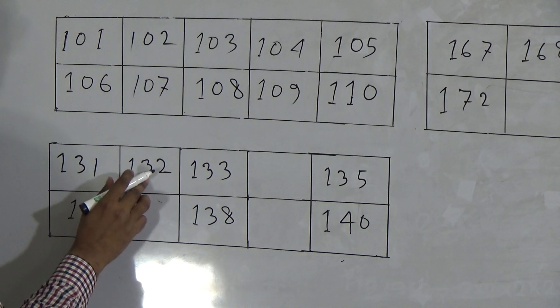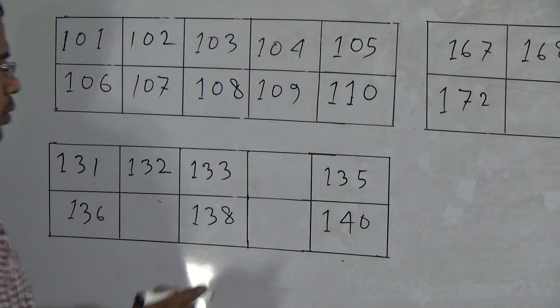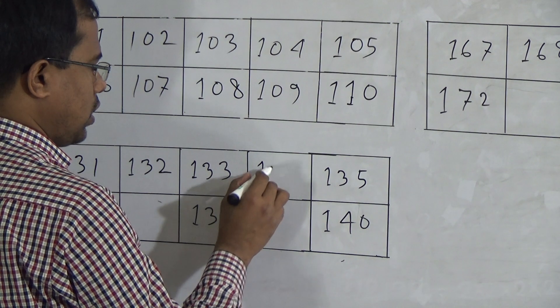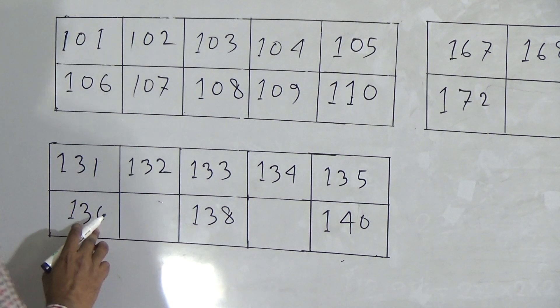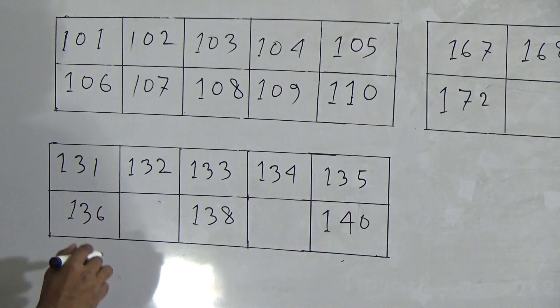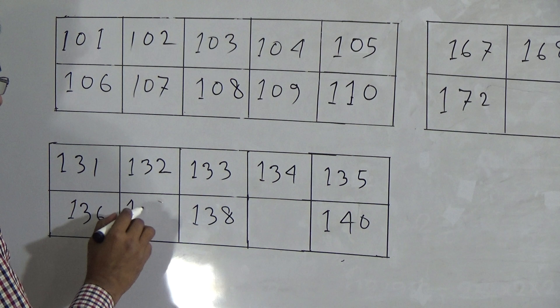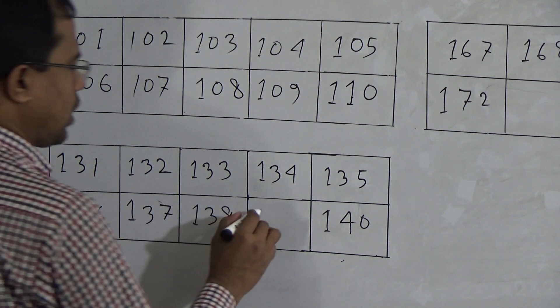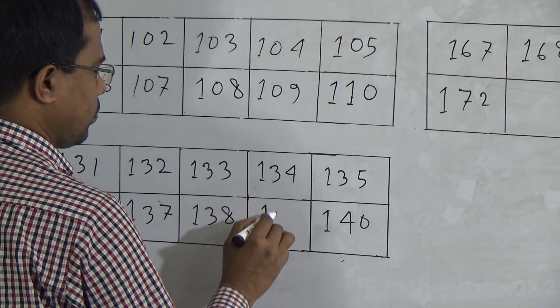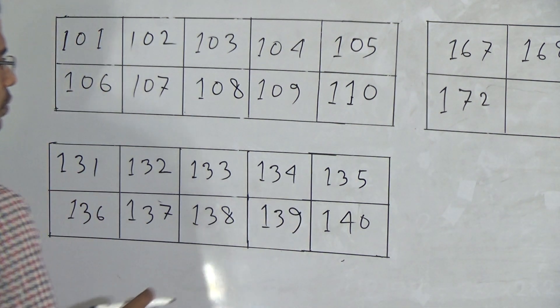131. Then 132, 133. After 33, you know that 34 will come. So, it will be 134. Then 135 given. Then 136. After 36, you know that 37. So, here we have to write 137. 138. Then 139.